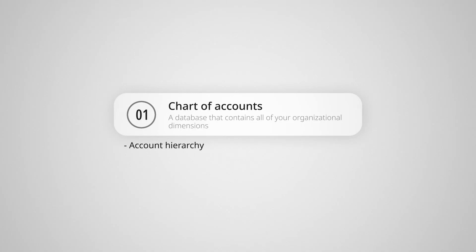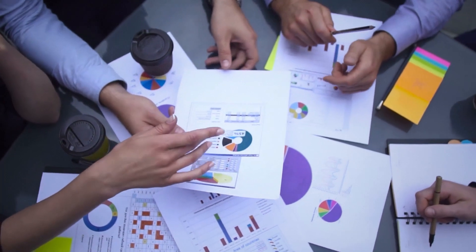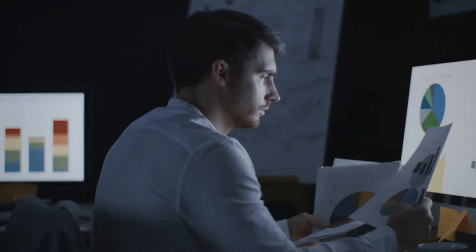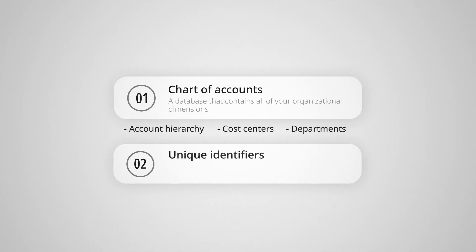There are two critical concepts you must understand. First is your chart of accounts — basically a database that contains all of your organizational dimensions, everything just mentioned. It should document your account hierarchy, cost centers, departments, all of it. Pro tip: whenever you want to do a financial analysis in a part of the company you aren't familiar with yet, your first step should be reviewing your chart of accounts. It'll show you what analysis is already possible with existing data versus what you'd need to implement first.